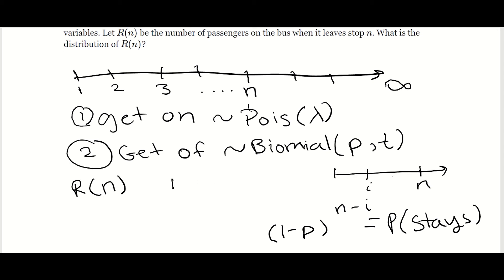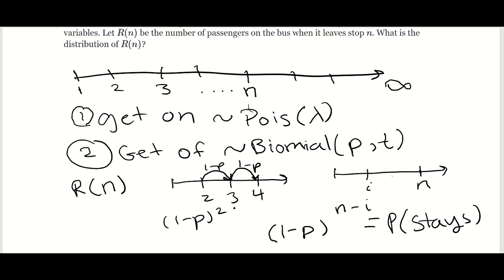For example, if i equals 2 and n equals 4, there's only one stop in between. The probability someone stays on from 2 to 3 is (1 minus p), and from 3 to 4 is (1 minus p), so (1 minus p) squared is the total probability that one person who got on at stop 2 stays until stop 4. Let me erase this.